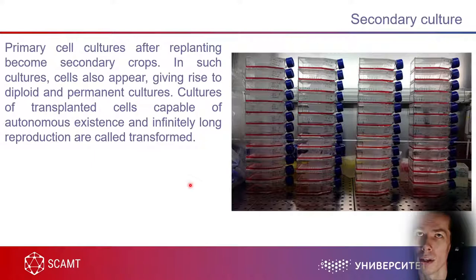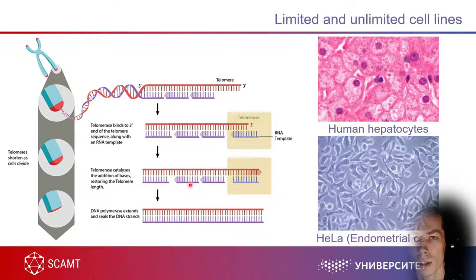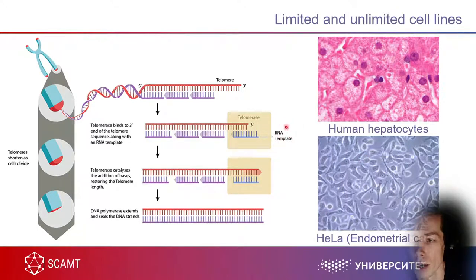To test drugs in laboratory routine — for example, to test nanoparticles — you probably need secondary cultures. After a primary cell culture is re-plated or passaged, it becomes a secondary culture. Almost all of the cells used in our laboratory are secondary cultures because they have been cultivated for years already. Connected with the terms of primary and secondary cultures are the terms of limited and unlimited cell lines.